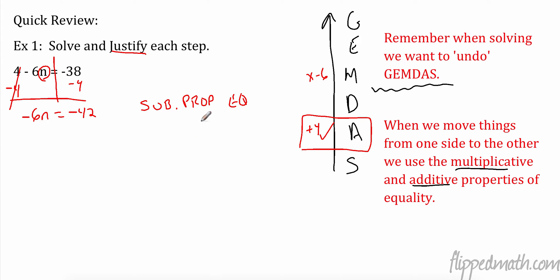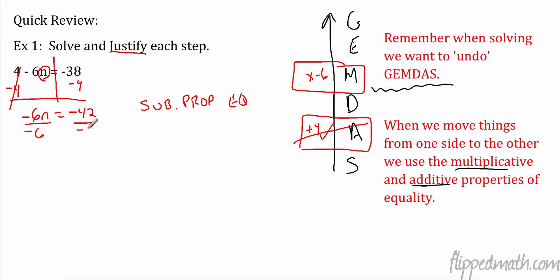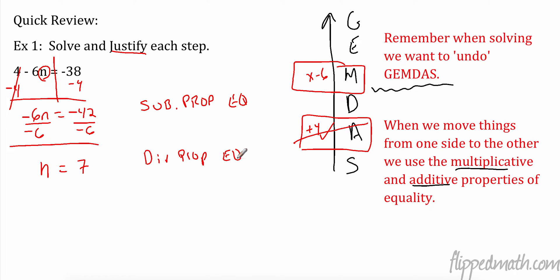These properties are all pretty basic. I subtracted both sides — that's the subtraction property of equality. Equality is important because it's an equation. What's the opposite of multiplying by negative 6? That would be dividing by negative 6. So I divide by negative 6 on both sides. That gives me n equals positive 7. My reason for that is the division property of equality.